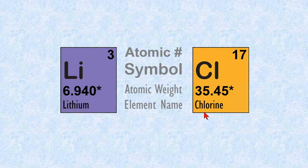You have the name of the element on the bottom, which is a little bit different than the periodic table that's in the front cover of your book. And then you have the atomic weight or atomic mass, and these asterisks I'll explain later.